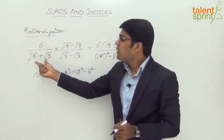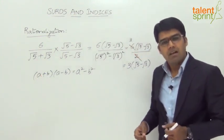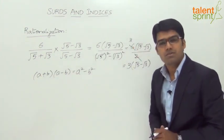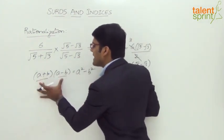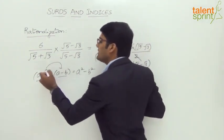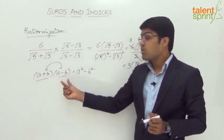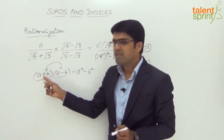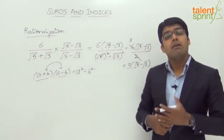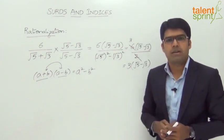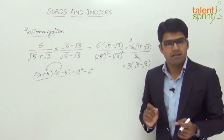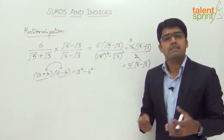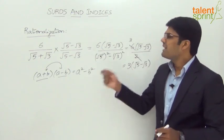So the fraction 6 divided by root 5 plus root 3 has become 3 into root 5 minus root 3, which is much simpler. We simply took the conjugate of root 5 plus root 3 — a conjugate is obtained by negating the second term. The idea is that a plus b into a minus b equals a squared minus b squared, and these two are conjugates of each other. A similar method is used for eliminating imaginary numbers in complex terms, where we use the complex conjugate — for example, a plus ib, whose conjugate is a minus ib. But since that is not part of our discussion, let us focus only on surds.